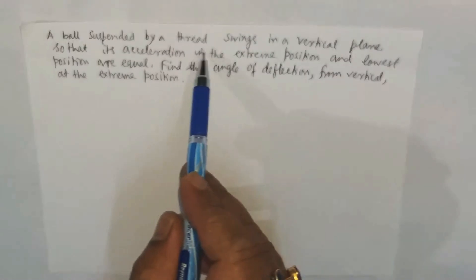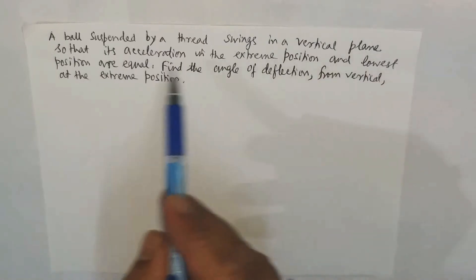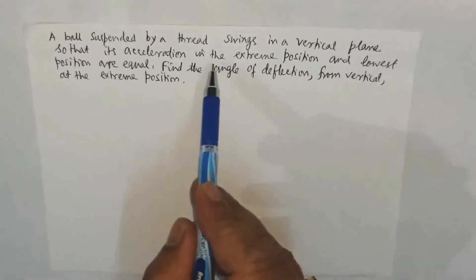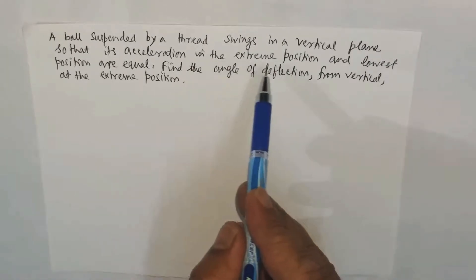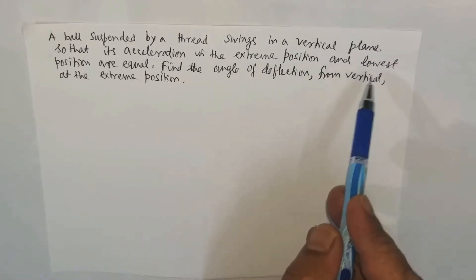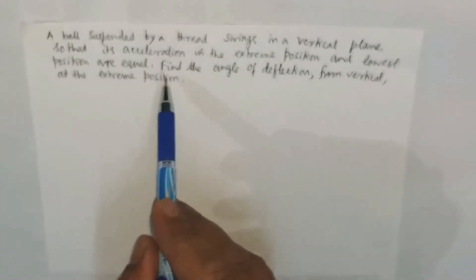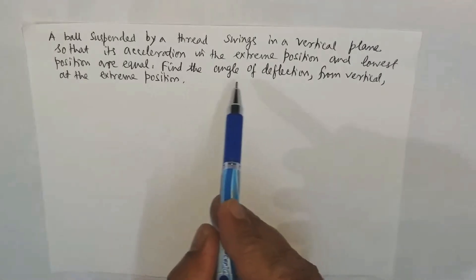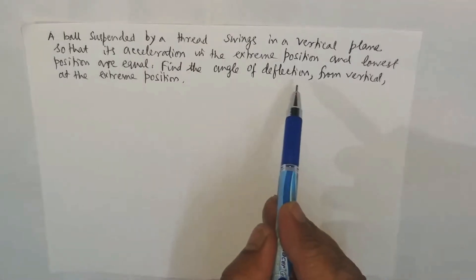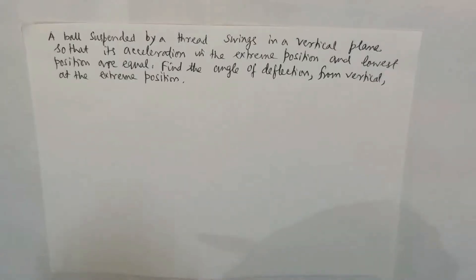A ball suspended by a thread swings in a vertical plane so that its acceleration at the extreme position and the lowest position are equal. Find the angle of deflection from vertical at the extreme position.